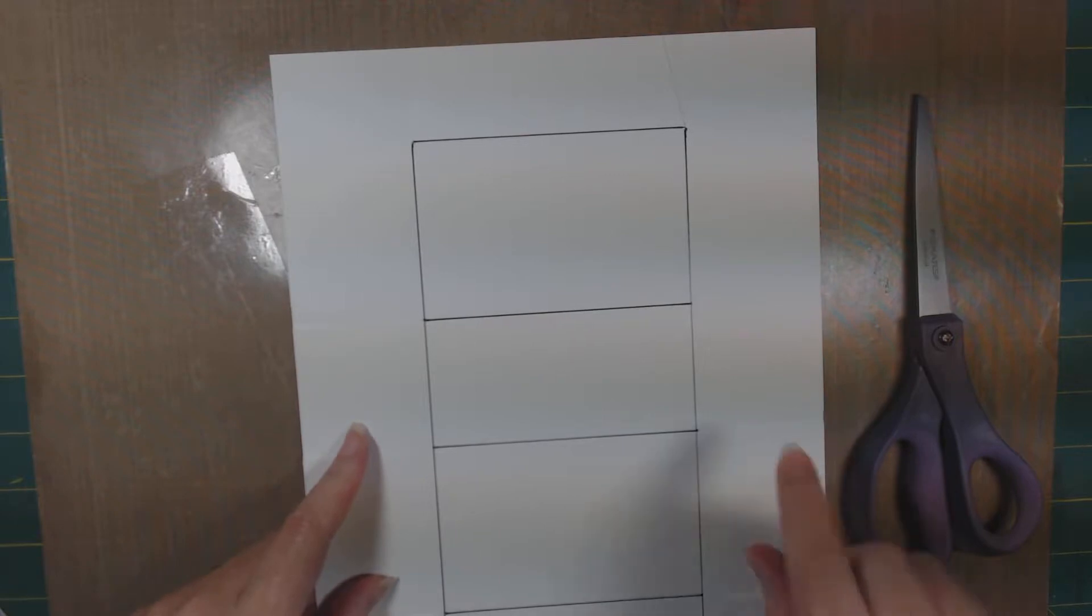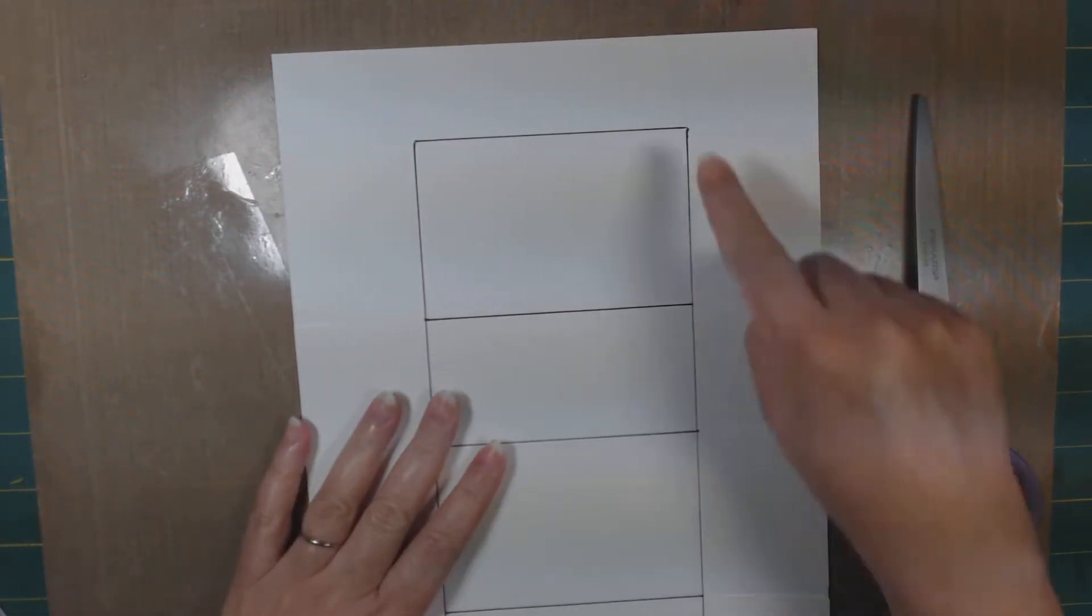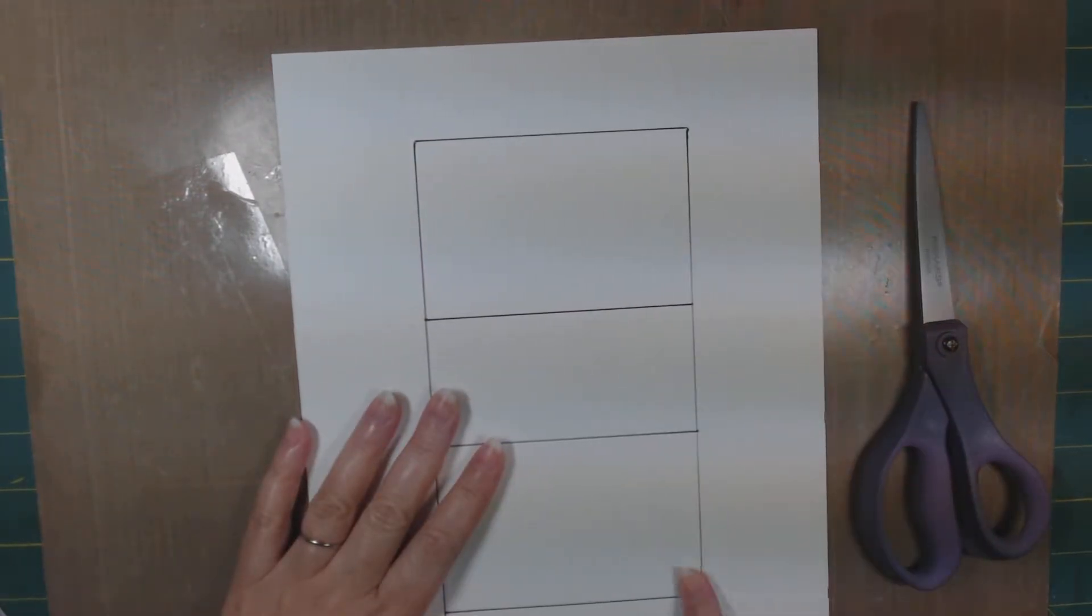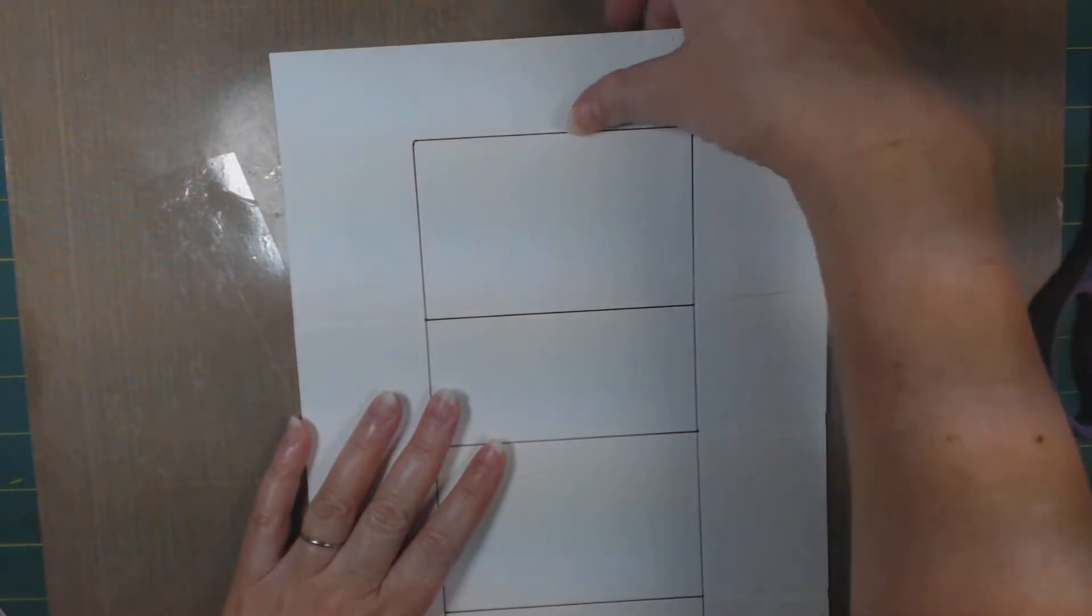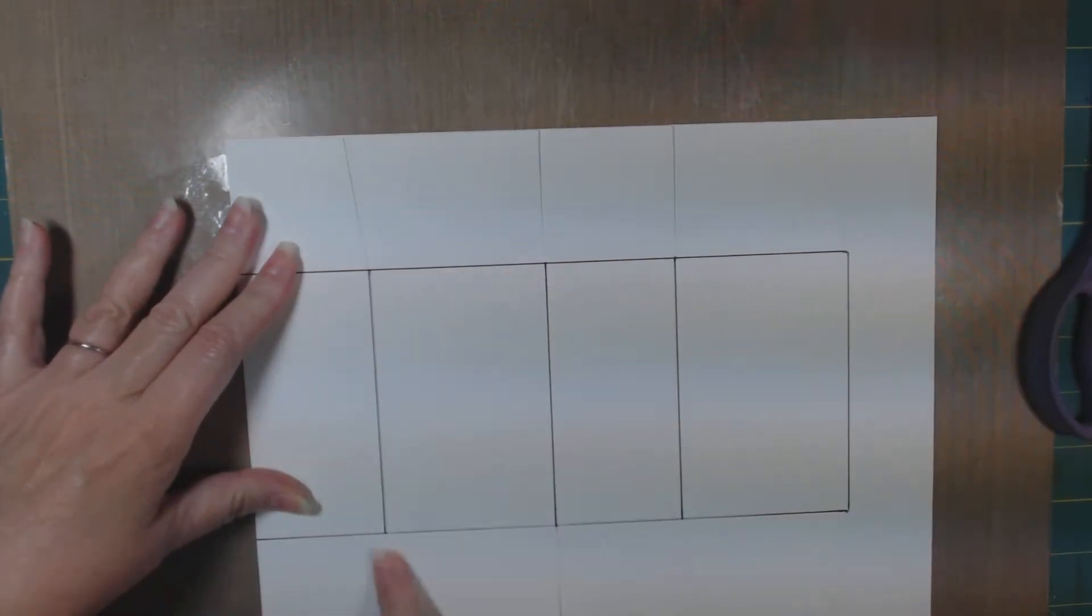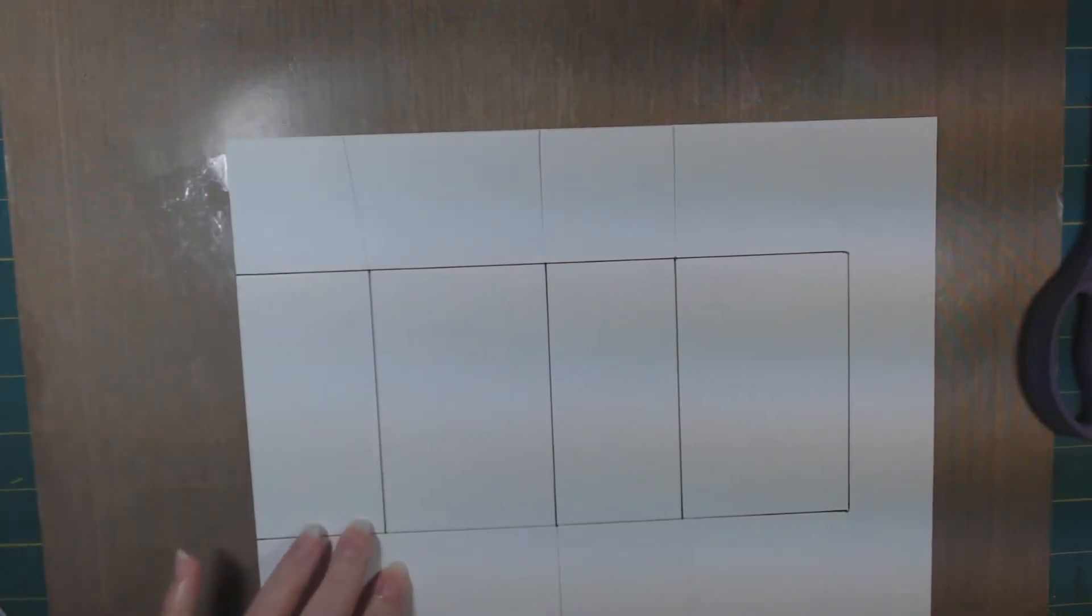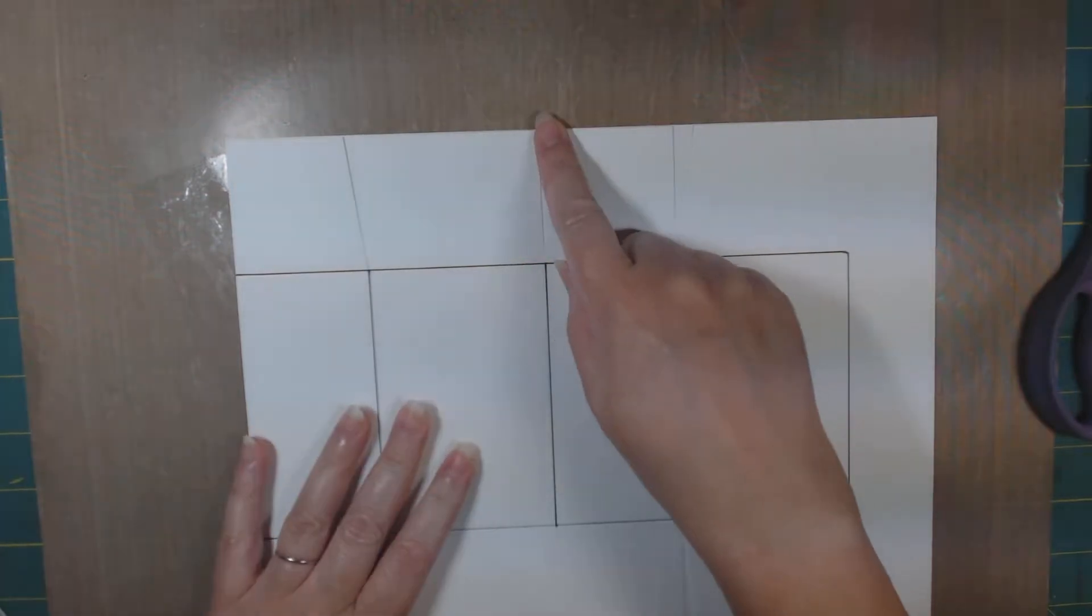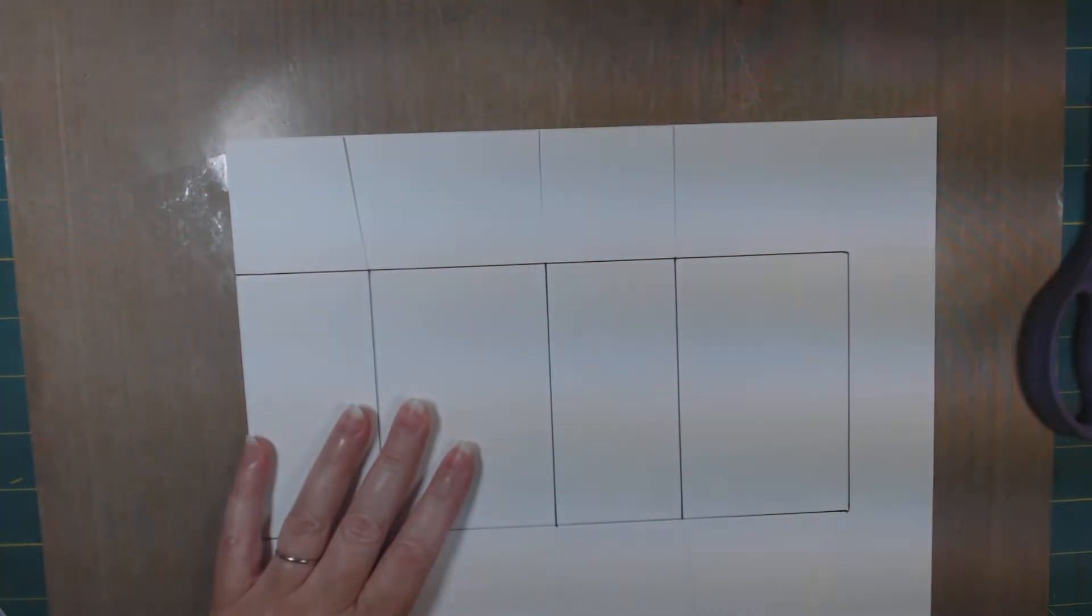So what we did was all the way down at two and a quarter was this score line here. And then over here was the six and seven-eighths score line. Then we turned our paper this way in the scoring tool and we scored at two and a quarter here, and then we scored at five and a quarter here, and then seven and a half, and then this was our ten and a half one.